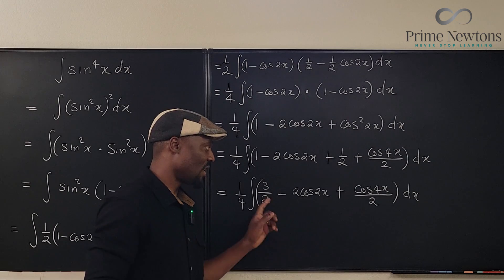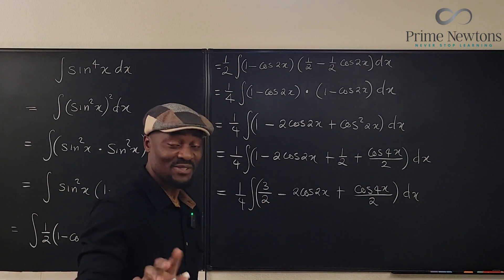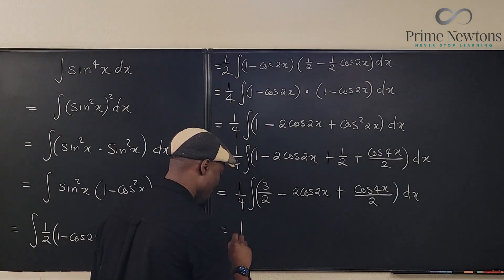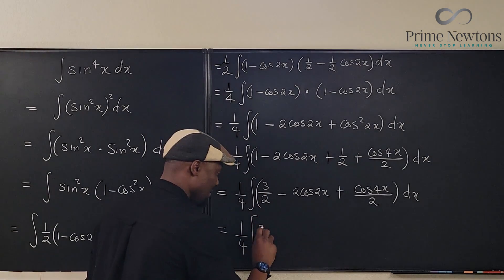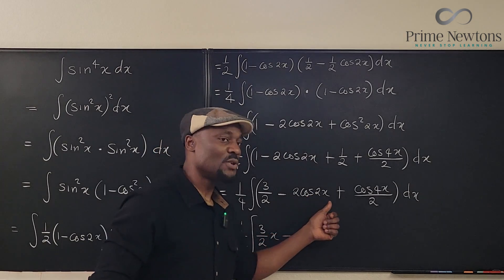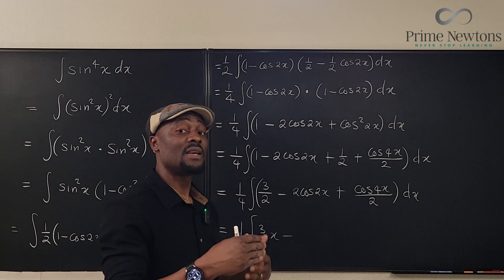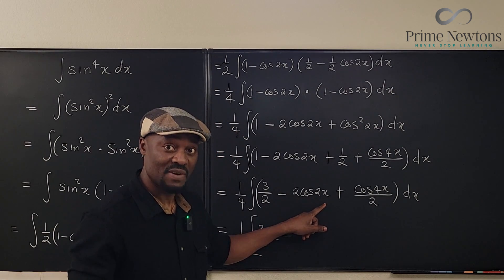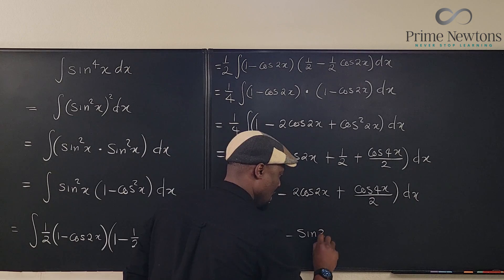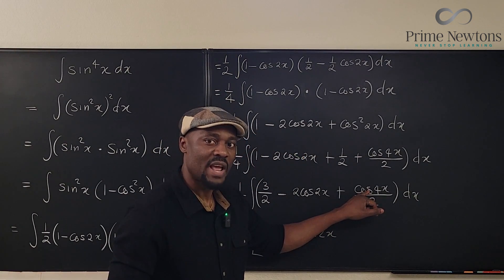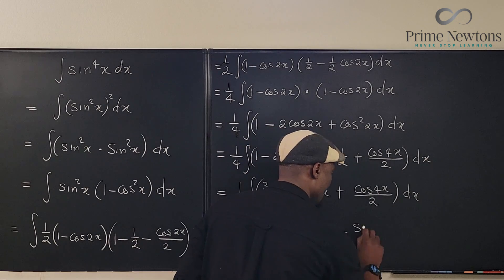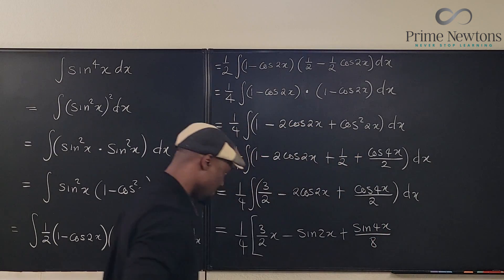There is nothing here that you cannot integrate. Integrating a constant introduces the variable, so 3/2 becomes (3/2)x. Integrating cos(2x): the antiderivative is sin(2x) divided by the derivative of the argument (which is 2), so we get sin(2x)/2; multiplied by the coefficient −2, this cancels the 2 and gives −sin(2x). Integrating cos(4x)/2: the antiderivative of cos(4x) is sin(4x)/4, and with the existing 2 in the denominator it becomes +sin(4x)/8. So the final answer is (1/4)[(3/2)x − sin(2x) + sin(4x)/8] plus a constant.